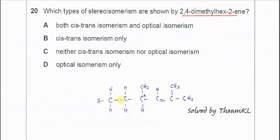So for this compound, the structure is this. This is first carbon, second carbon. The double bond is located between the second and the third carbon. Third carbon, fourth carbon, fifth, and the last one.